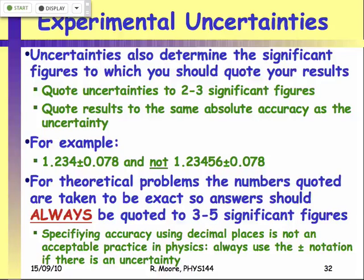If your uncertainty were 0.1, you'd quote it as 1.2 ± 0.1. It's not the number of significant figures that's important — it's the precision. You quote the measurement to the same degree of precision as your uncertainty allows. You would not write extra digits because if your uncertainty is 0.078, you have absolutely no knowledge of digits beyond that — they're completely inaccurate.